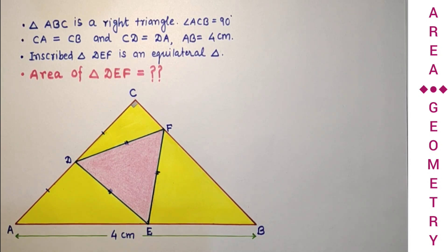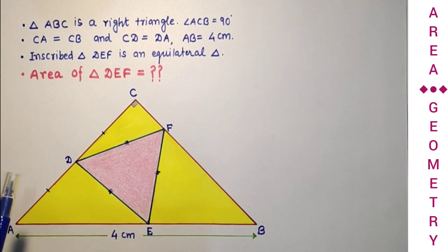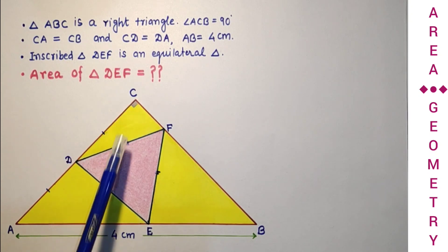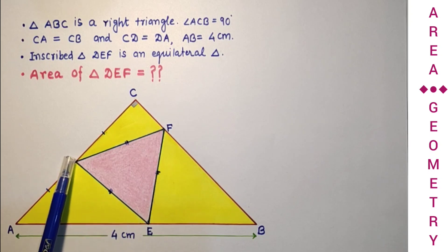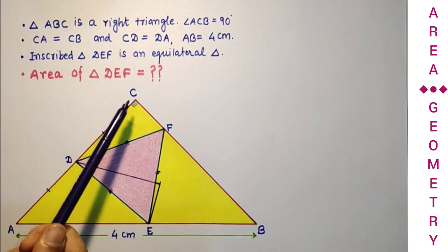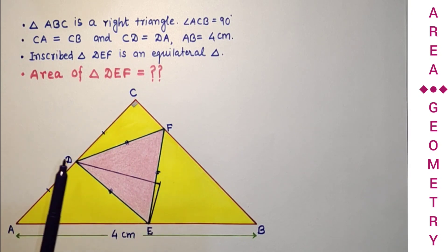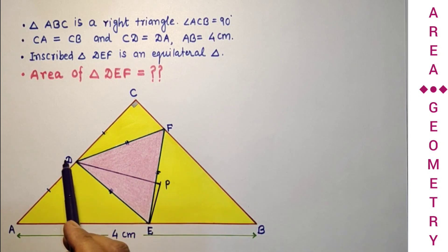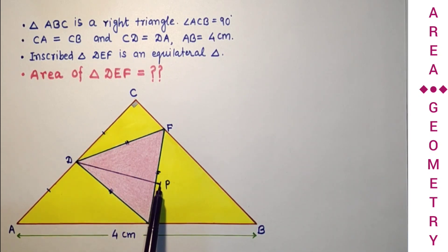I tried this with a pure geometry method, but in the last step I have used trigonometry. We need some constructions to solve this question. If we rotate triangle FDC about point D with a clockwise rotation of 60 degrees, then C will move to a new position and DF will coincide with side DE. For this construction, we draw EP equal to CF and DP equal to DC. Let us call this point P.